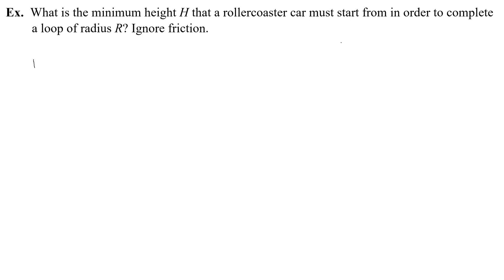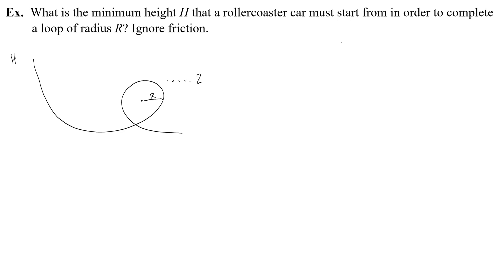We're going to ignore friction. I'm going to draw a loop — it starts at some height h, and the radius of this loop is r. That immediately tells me that the height of the loop is 2r, and we'll call the ground zero.